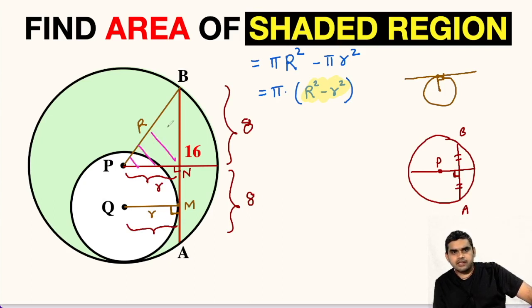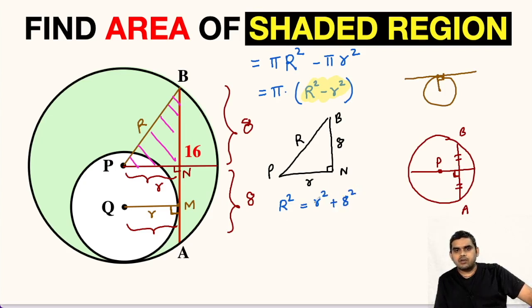Now focus on this triangle P, B, N. Let me draw it outside. So this point is point P, this is N, here we have perpendicular, this is B. So PB length is capital R, PN is small r, and BN we just found as 8. We will apply Pythagorean theorem in this triangle PBN. So we will get capital R squared equals small r squared plus 8 squared. We will subtract small r squared from both sides. So this will be capital R squared minus small r squared equals 64.